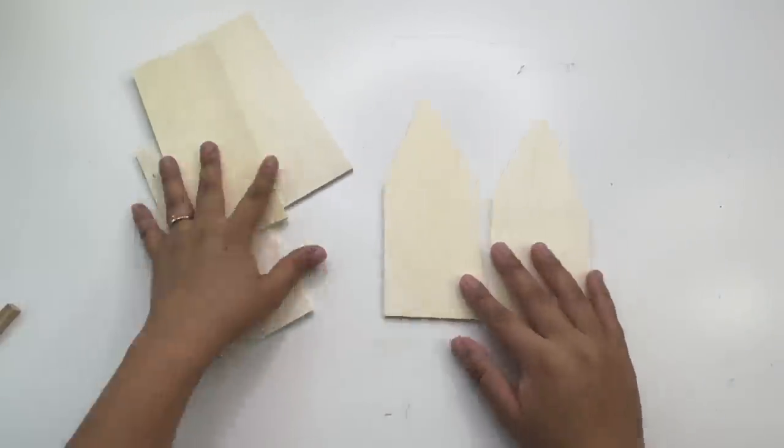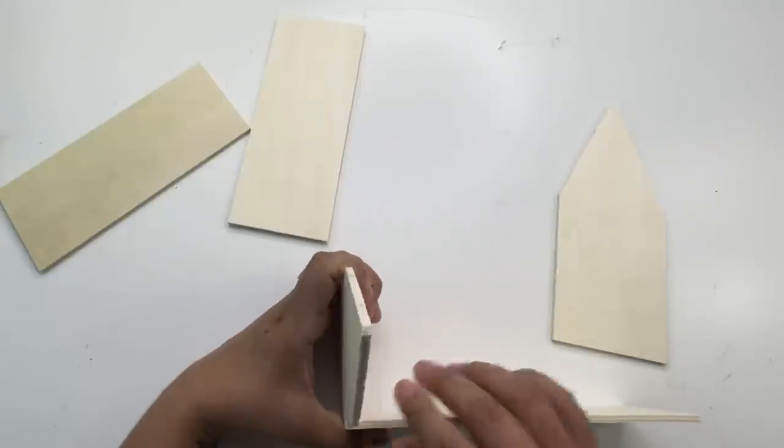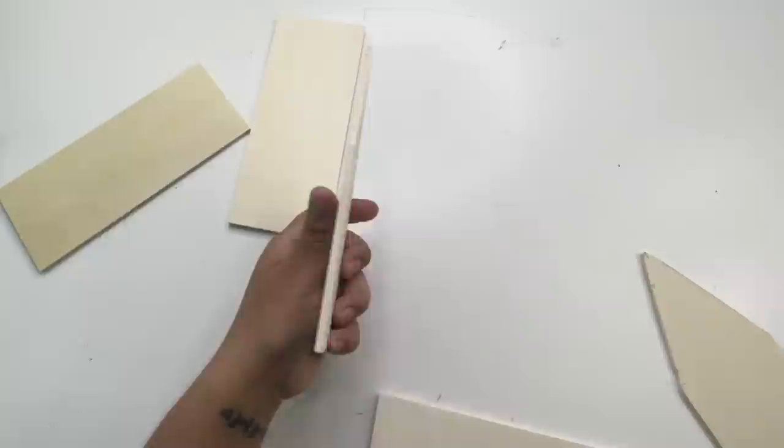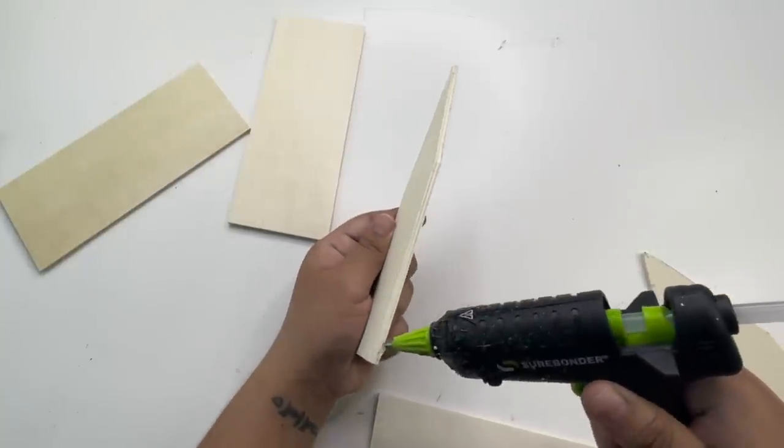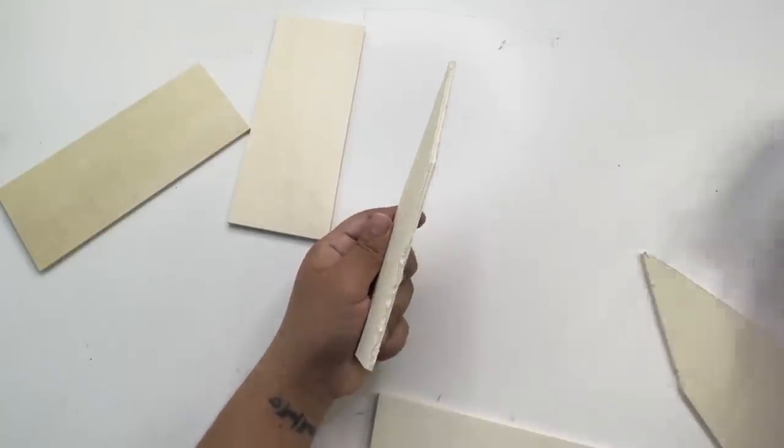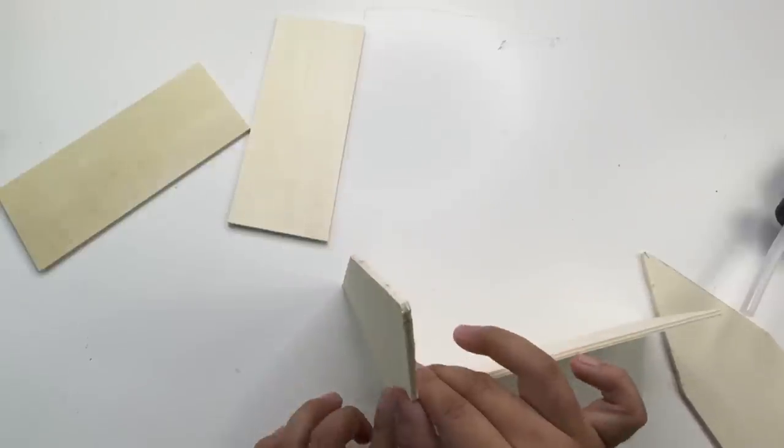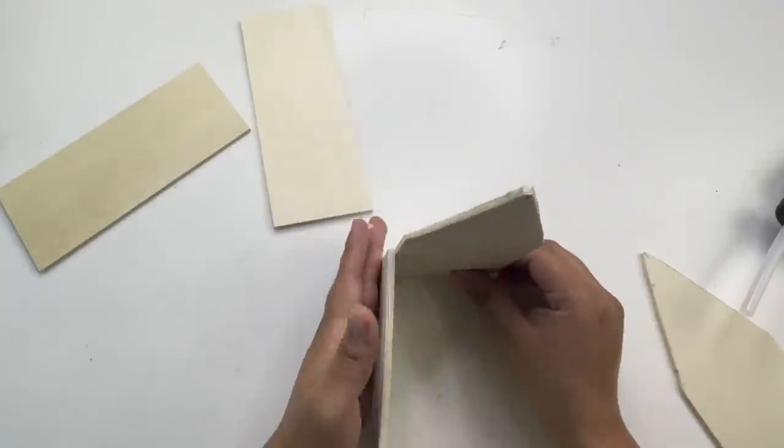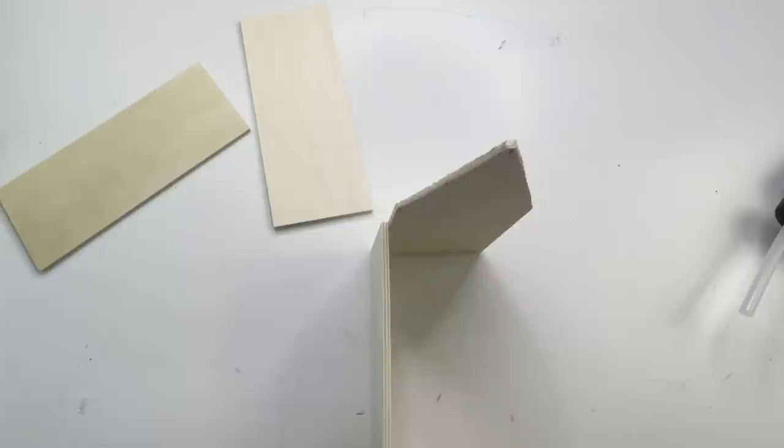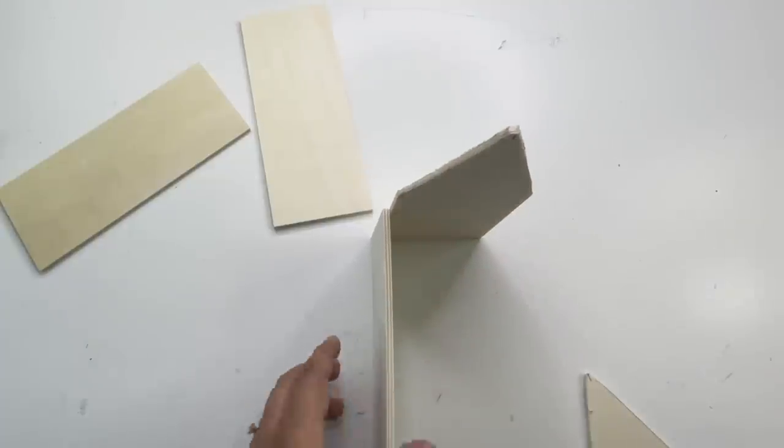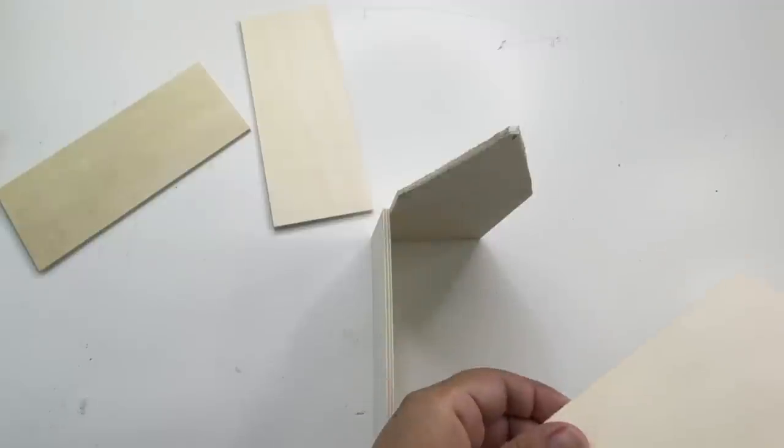Now I'm going to glue everything together to make the caddy. I'm using hot glue but I will be adding some jenga blocks for extra support. You can use wood glue if you like. I just chose not to because I don't like waiting 24 hours to start painting.